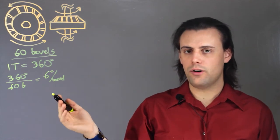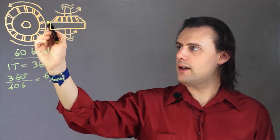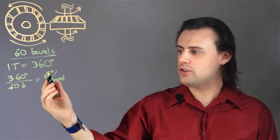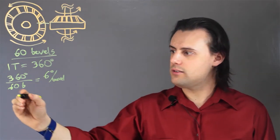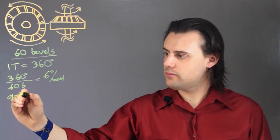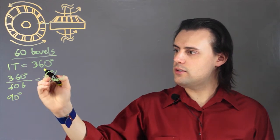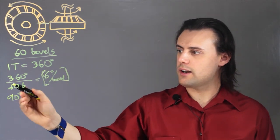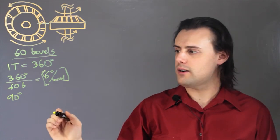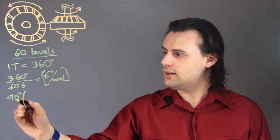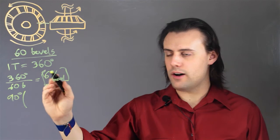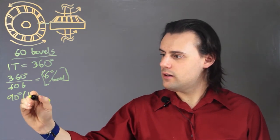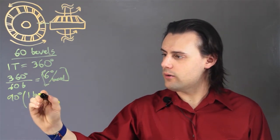If I want to know how many bevels have to pass a certain point to turn a certain angle, like say 90 degrees, then I simply use my conversion, which I calculated by knowing how many total bevels my gear has. I take 90 degrees and divide by my conversion, which is 6 degrees per bevel.